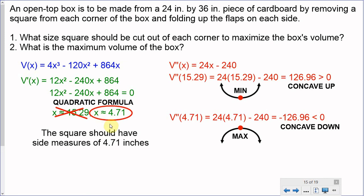And what have we found? Well, we've found the answer to our first question. What size square should be cut out of each corner to maximize the box's volume? Well, if you remember, those squares that we were cutting the corners of, they had an edge of x inches. And we found what x is. x is 4.71. Therefore, the square should have side measures of 4.71 inches. And that's your answer to question number one.